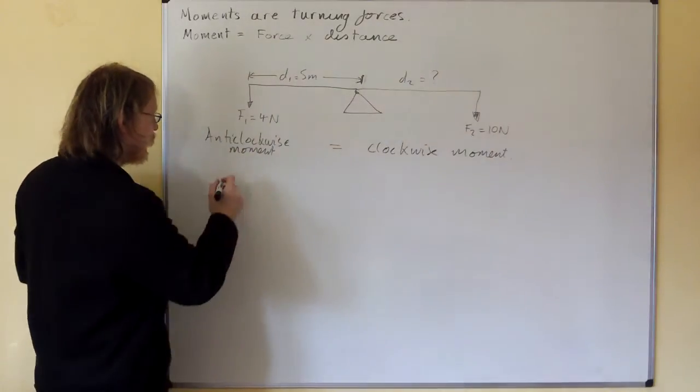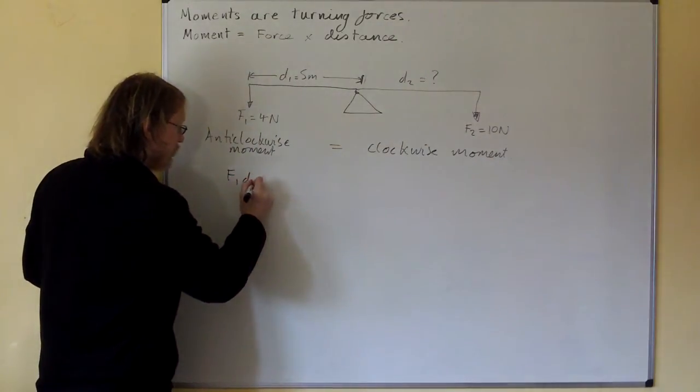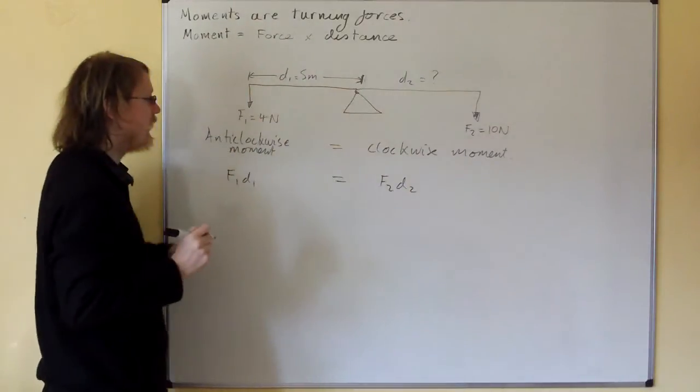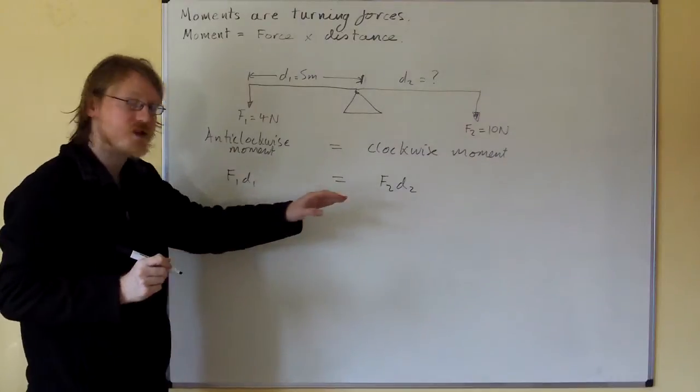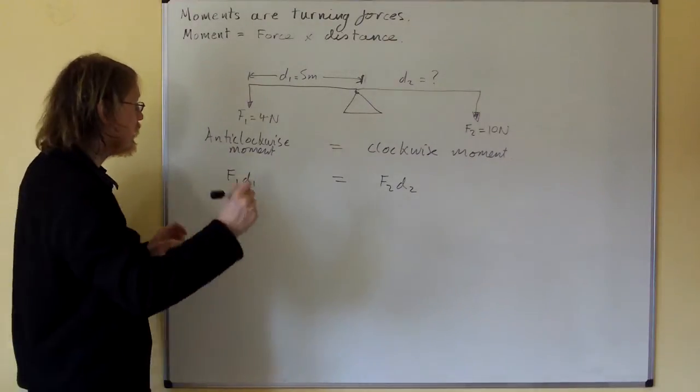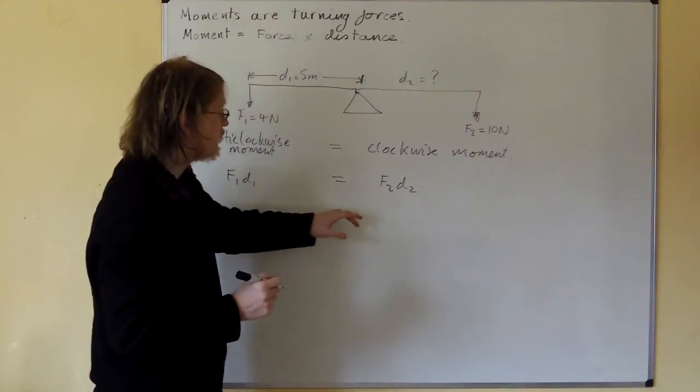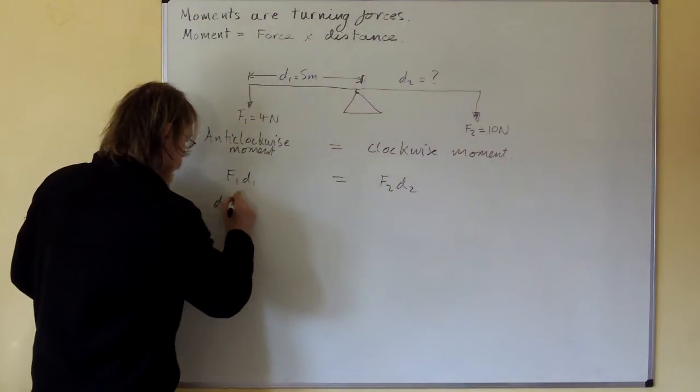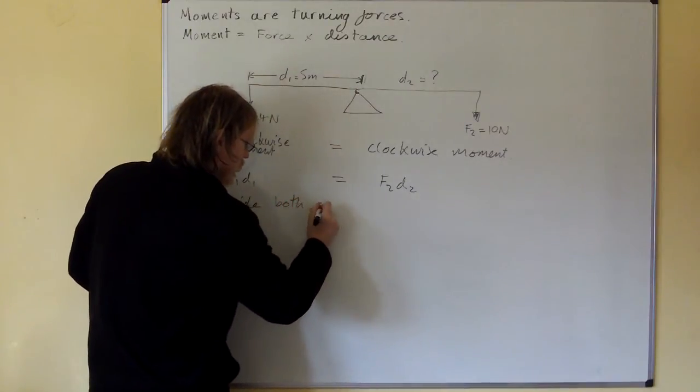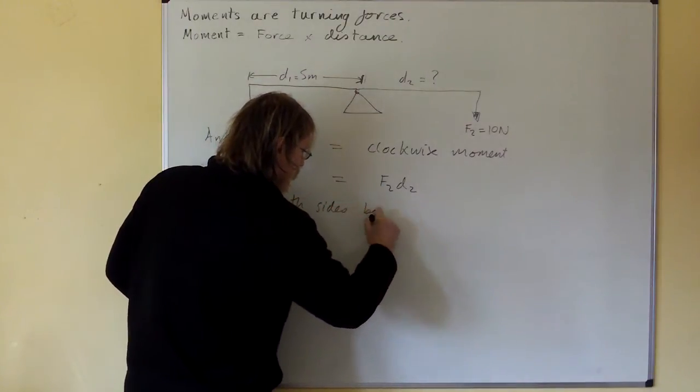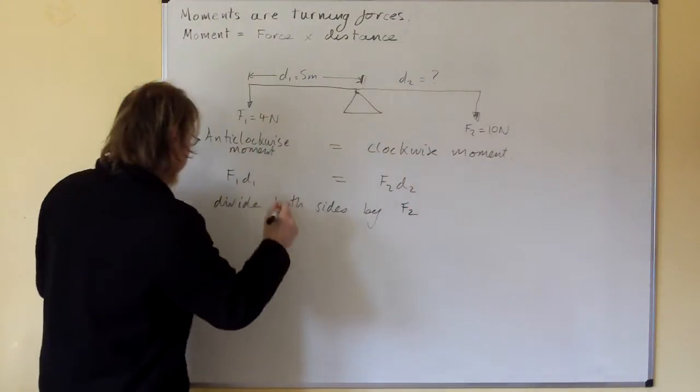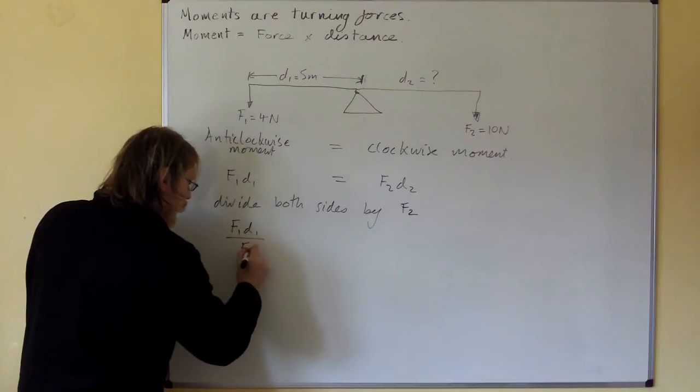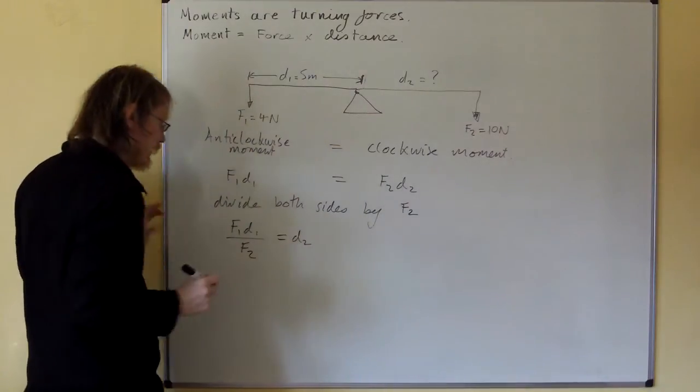OK, now then, so our anti-clockwise moment is f1 d1, and our clockwise moment is f2 d2. Right, now then, we could just put in the numbers, but it's more interesting at this stage to do a bit of rearranging. So let's divide both sides by f2 to get d2 the thing we need left by itself. That gives us f1 d1 divided by f2 equals d2, which is what we want.